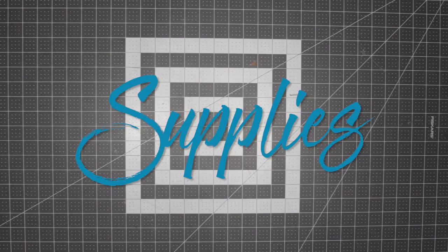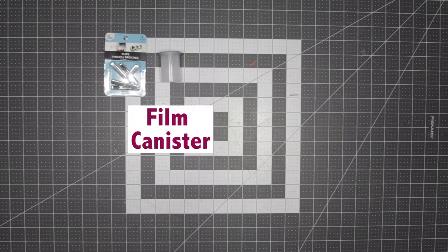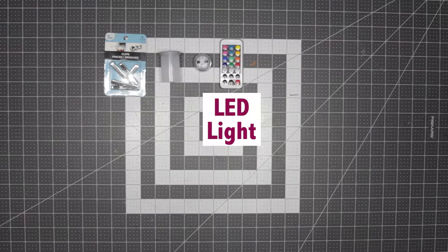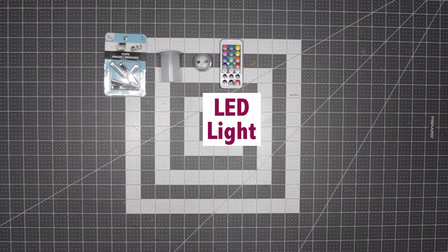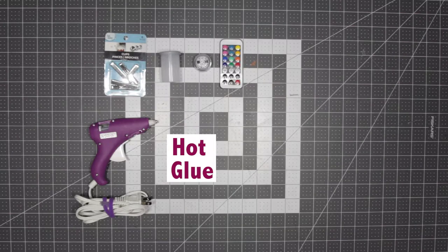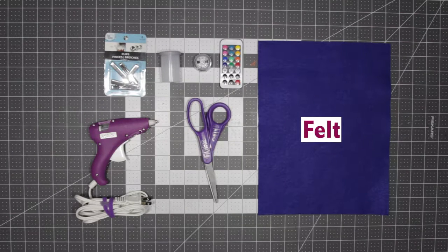The supplies you will need for this project are hair clips, a film canister or a similar size little Tupperware kind of thing, an LED light. Look in the description below to the ones that I bought that have a little remote, but they also make smaller ones that are not remote started. Hot glue, a scissor, and a piece of blue felt.